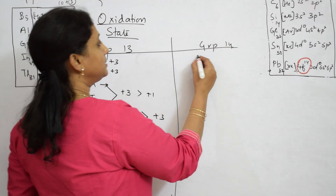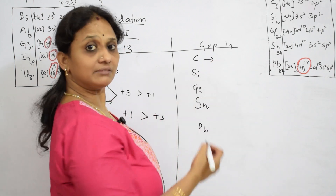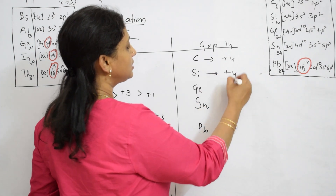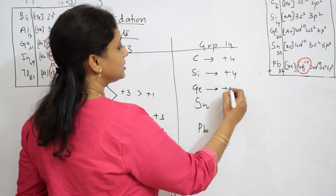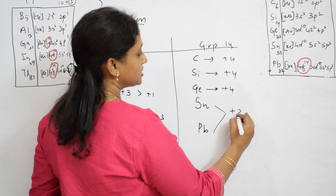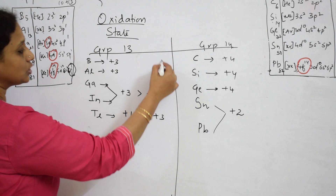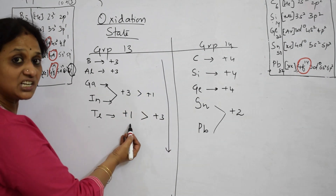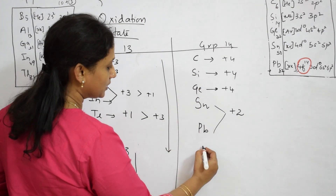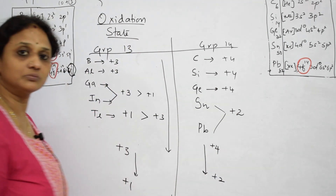Now when I come back to carbon, silicon, germanium, tin, and lead — carbon is tetravalent in nature, so +4. That is the reason they come under group 14. Silicon also tetravalent, germanium also +4. But when it comes to tin and lead, the prominent oxidation state observed is +2 only. As we go down the group, the oxidation number decreases — from +3 it becomes +1, and from +4 it decreases to +2. Very important.